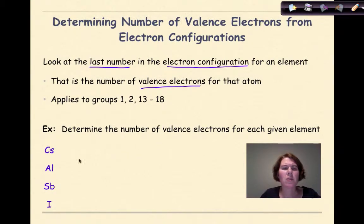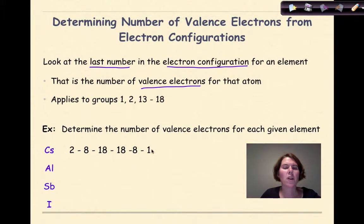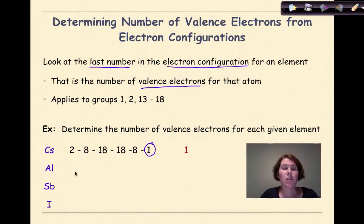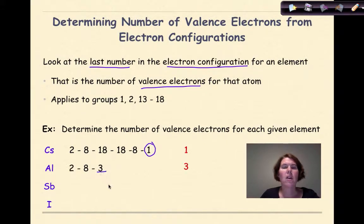Let's look at a couple of examples. Cesium has an electron configuration of 2, 8, 18, 18, 8, 1. The last number is 1, therefore the number of valence electrons is 1. Aluminum is 2, 8, 3 — the last number is 3, therefore 3 valence electrons.